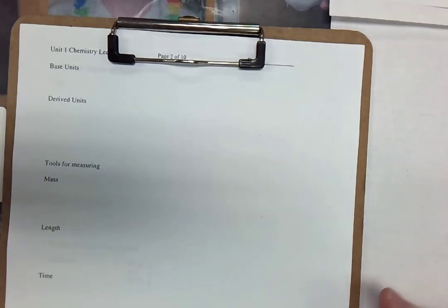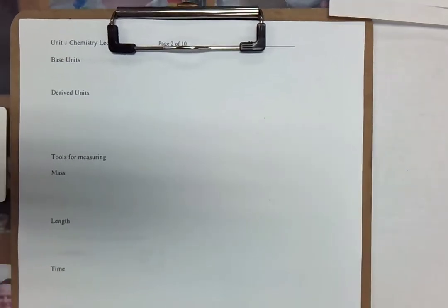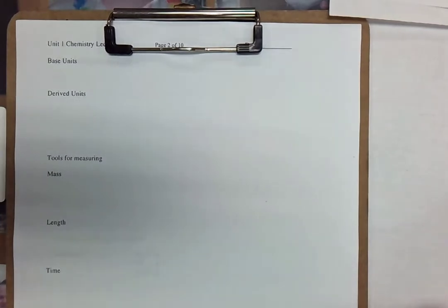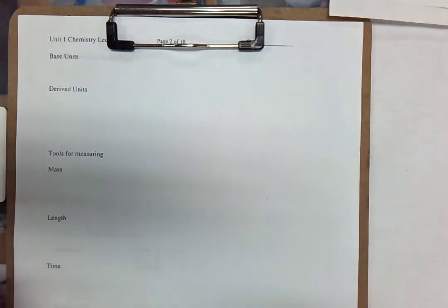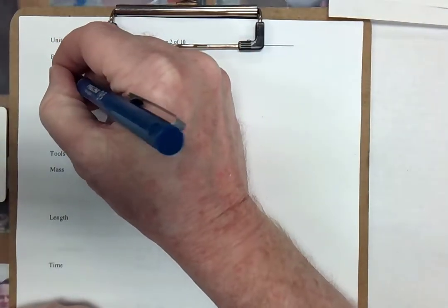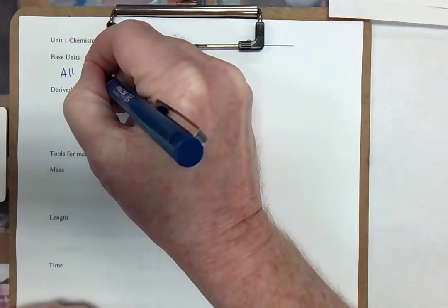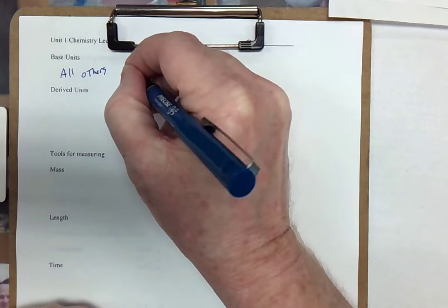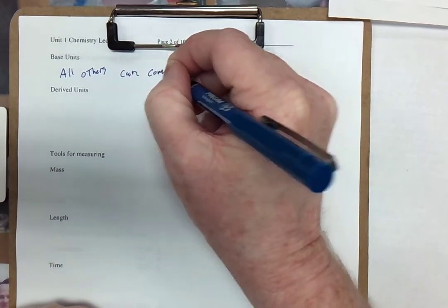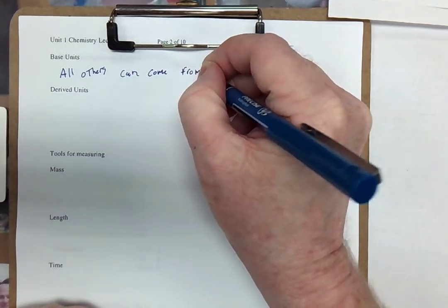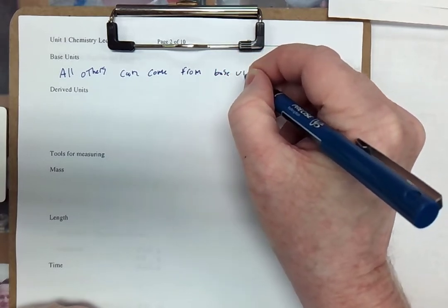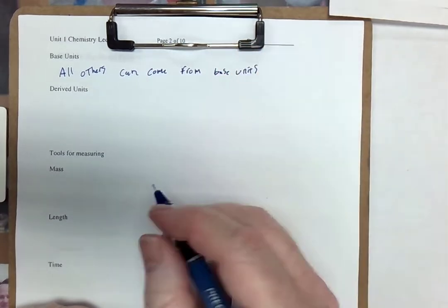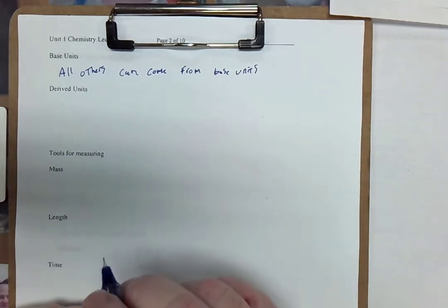Now the base units are those seven that I just showed you. You should be familiar with them. All others are based or defined by the base units. All others can come from base units. So we call those derived units.